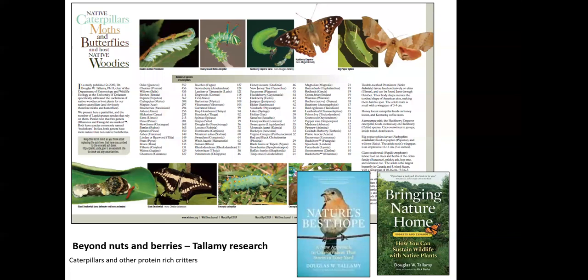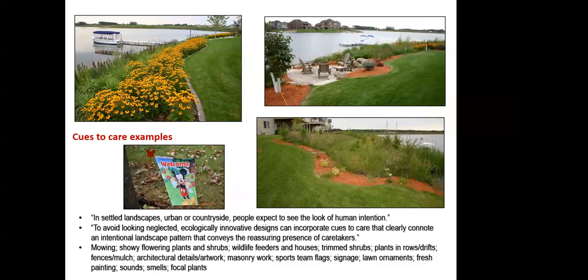Sometimes with these best practices we add what we call 'cues to care' — showing the neighbors that this is a consciously cool thing we're doing. We put little things like a sign in, or a stone edge around a drift of black-eyed Susans with a nice s-curve line. These are all things we can do to our planting to make it look a little less wild and perhaps a little more acceptable to a neighbor who thinks it might look messy.